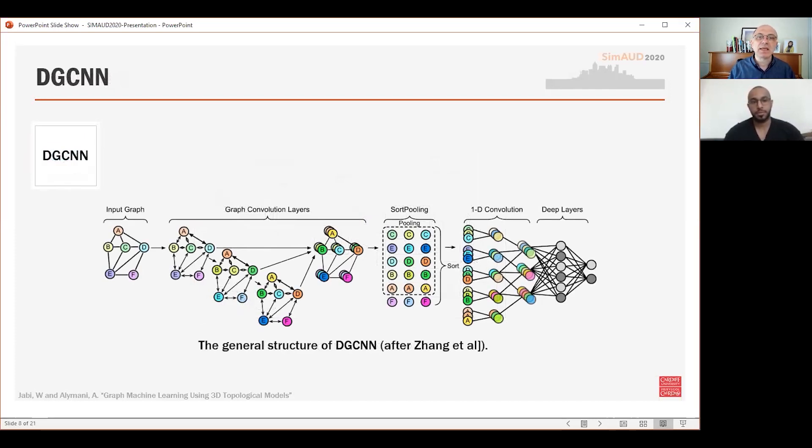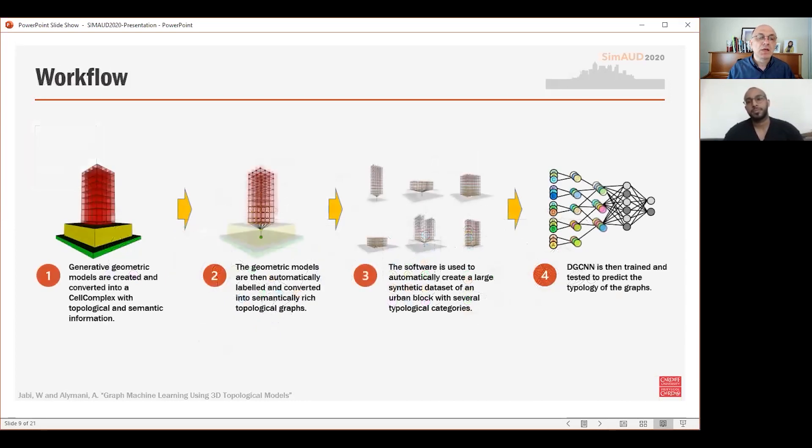DGCNN, on the other hand, as you can see here, accepts a graph as written using a specific format in a text file and then applies graph convolution layers and then sort pooling before handing the data to a regular neural network.